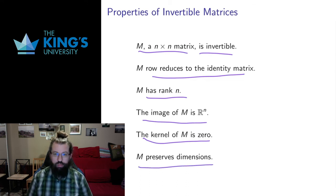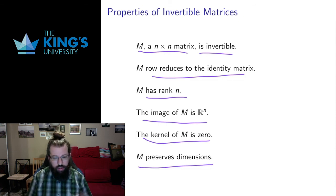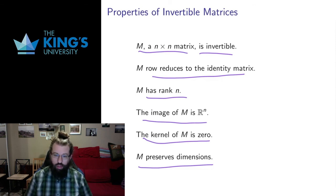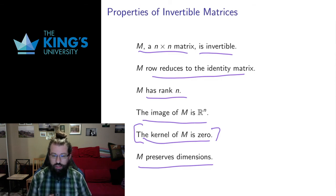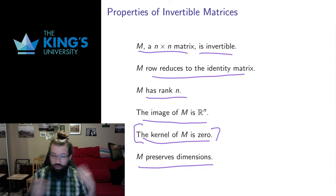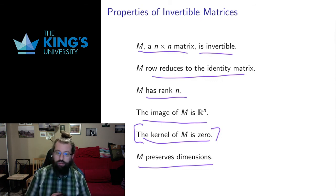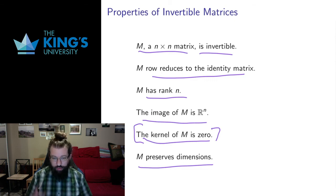This is also equivalent, speaking more geometrically, to the idea that M preserves dimensions. If it acts on a plane, the output will still be a plane; if it acts on a line, the output will still be a line; if it acts on a three-space, the output will still be a three-space. All of that ties together with the kernel being zero — we're not losing any information. We might stretch, spin, and do all sorts of things, but we won't collapse lines or planes down to zero. An invertible matrix can do rotations, reflections, skews, dilations, and twists of various types, but it cannot destroy dimensions. It sends lines to lines and planes to planes.